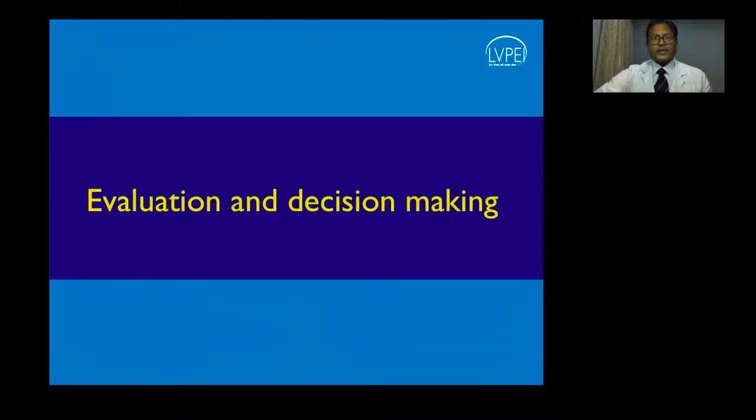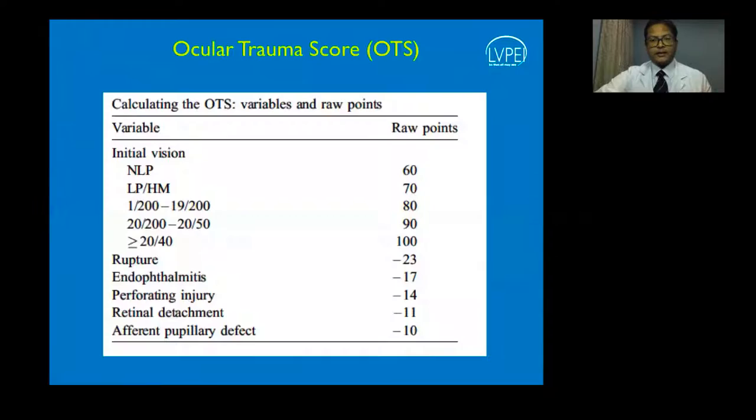Before we start the discussion on trauma, it is also important to prognosticate and give a numerical score to the trauma at hand. The Ocular Trauma Score (OTS) helps in doing that. It is calculated by a simple addition of the presenting vision, and you deduct points for any additional pathology that the patient has.